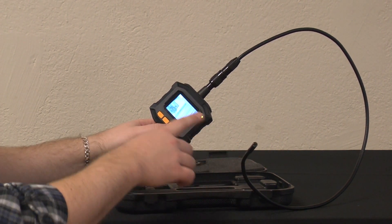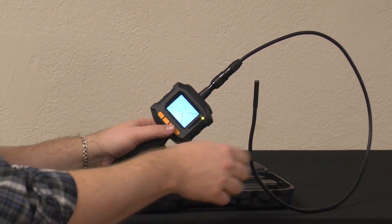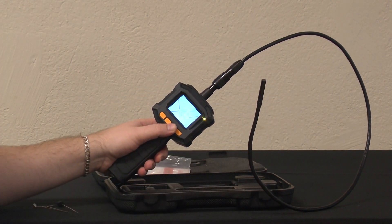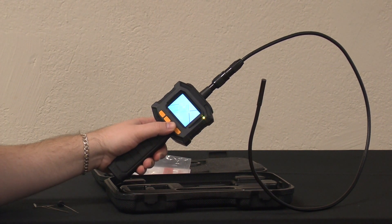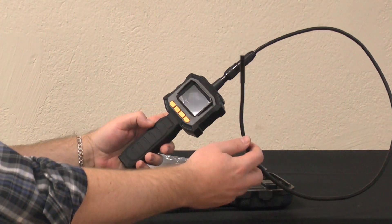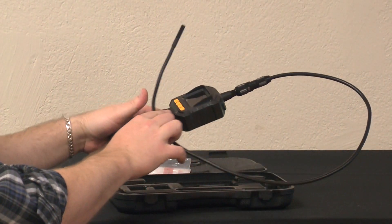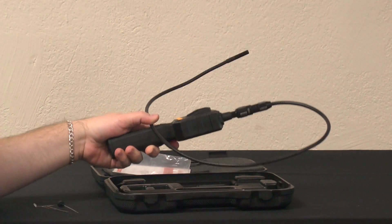You can also, depending on the orientation of the camera, you can rotate it as well to fit your needs. And that's it. That's the Video Bore Scope Camera, the TVB-TECH GL8898. You can find it on tequipment.net. Thanks for watching.